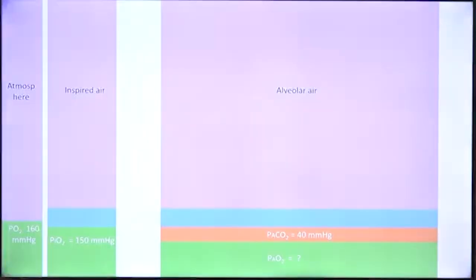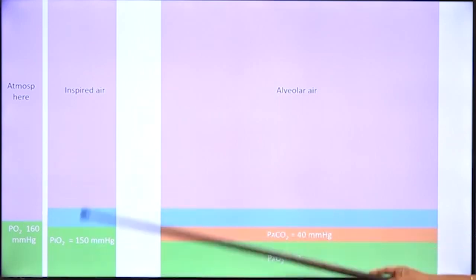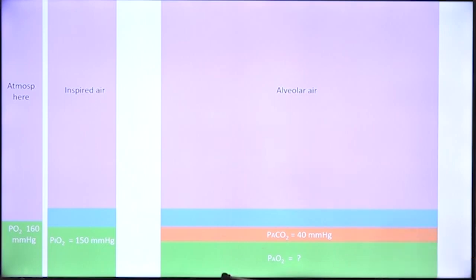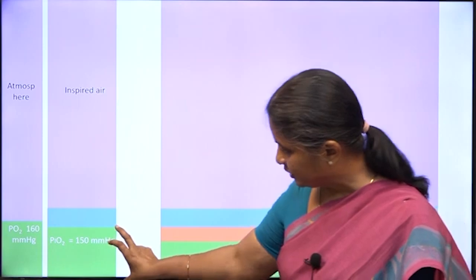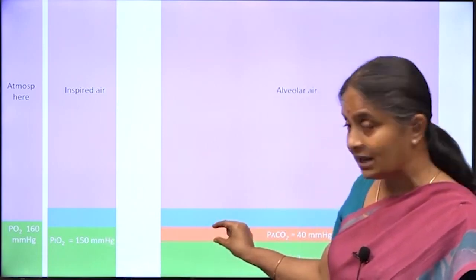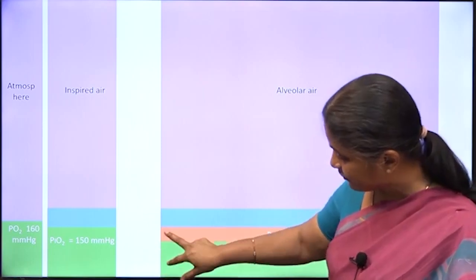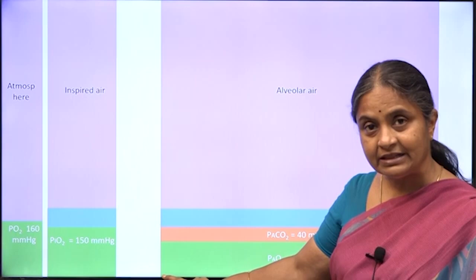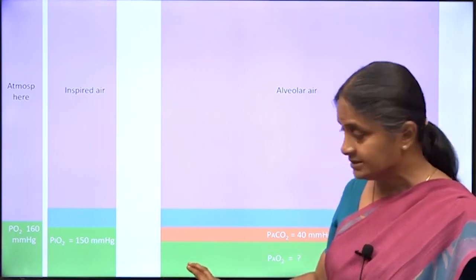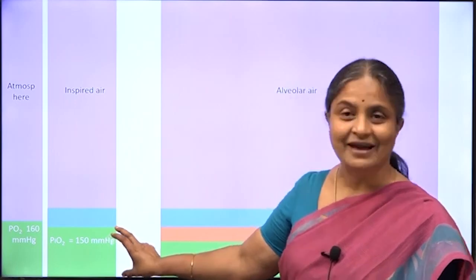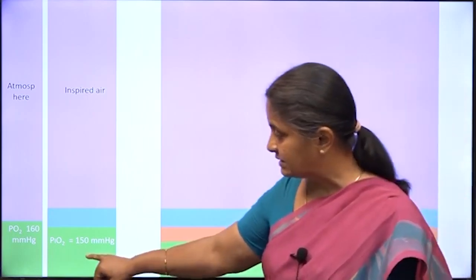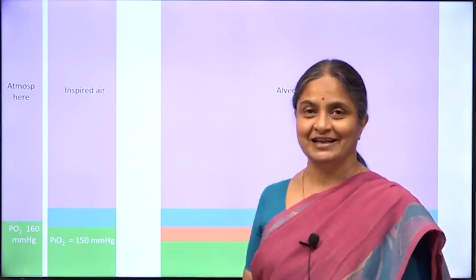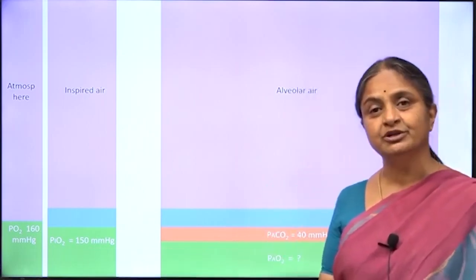Atmospheric air, inspired air with water vapor added, and alveolar air with carbon dioxide as well. The alveolar gas equation gives us a way of estimating alveolar oxygen when we know inspired oxygen concentration and alveolar carbon dioxide concentration. The sum of carbon dioxide and oxygen in the alveolar air equals the concentration of oxygen in the inspired air. This relationship — that sum of CO₂ and O₂ in alveolar air equals inspired oxygen — was noted by Rahn and Fenn.